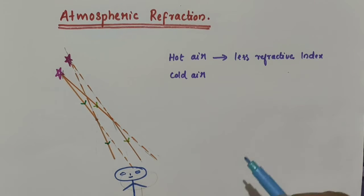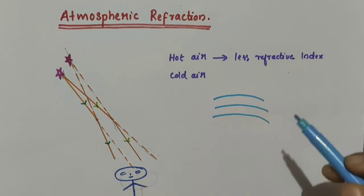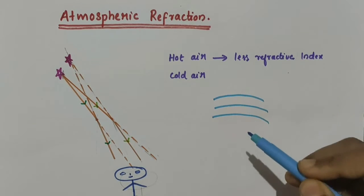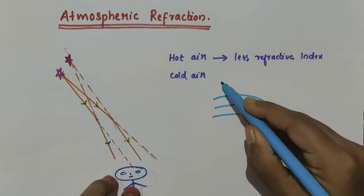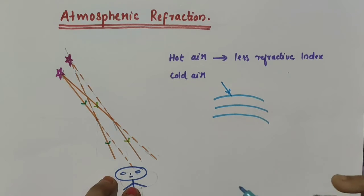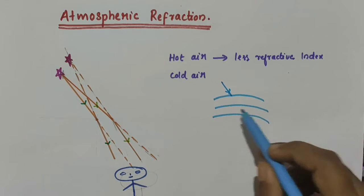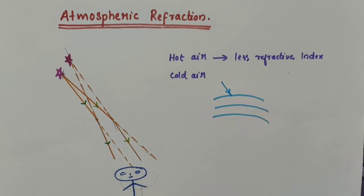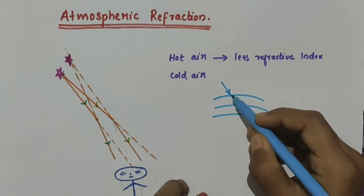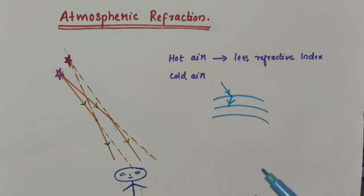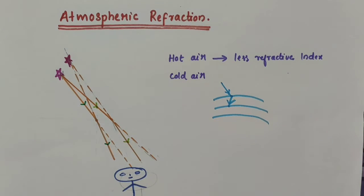Our atmosphere has different layers of air which have different densities and refractive indices. So when a light ray passes through the atmosphere, it passes through different layers of air which have different densities and different refractive indices. So refraction takes place. This refraction of light by the earth's atmosphere is called atmospheric refraction.